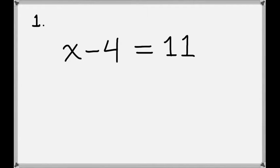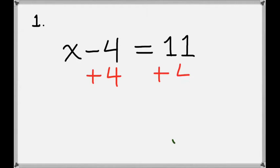Our first problem is x minus 4 equals 11. We want to get x by itself on the left hand side. So the first thing we want to do is add 4. But whatever we do on the left hand side we also have to do to the right hand side to keep the equation balanced. So we'll add 4 to the other side as well.